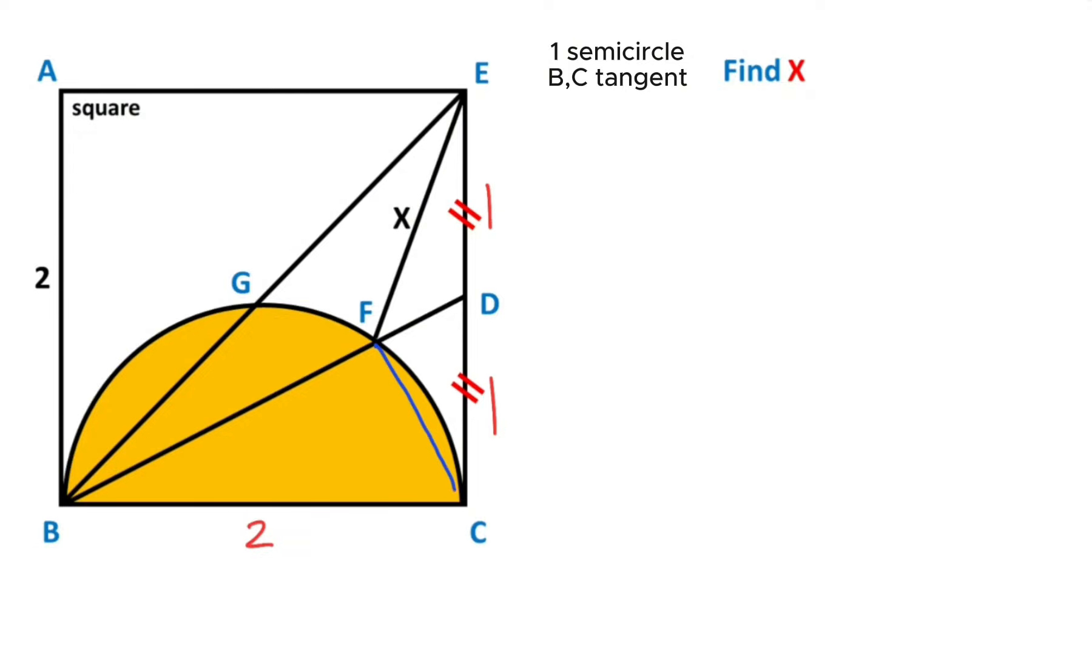Notice that there is diameter opposite side of the angle BFC, right? So angle BFC must be equal to 90 degrees. Then I want to represent the length of the BD with a.